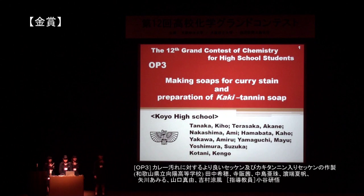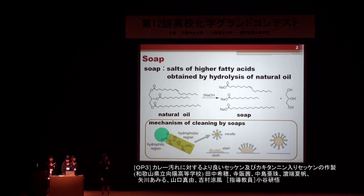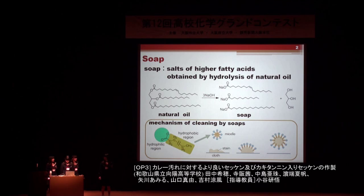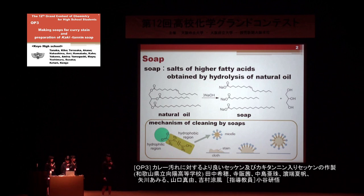We will talk about making soap for curry stain and preparation of kakitanin soap. Soap is made from fatty acids prepared by hydrolysis of natural oil. The fatty acid soap has a hydrophilic carboxylate group and a hydrophobic hydrocarbon chain. The aqueous salt solution forms micelles by aggregation of amphiphilic molecules. The inner sphere of the micelle is hydrophobic and the outer sphere is hydrophilic.